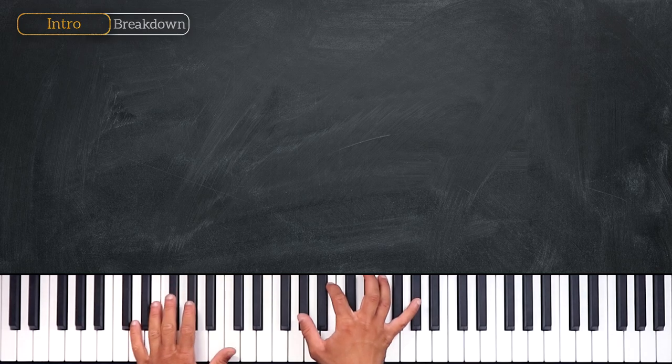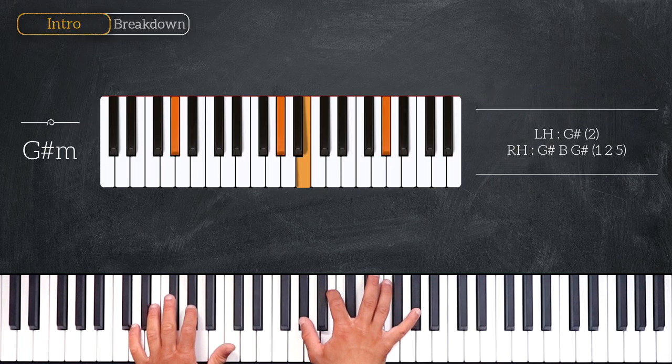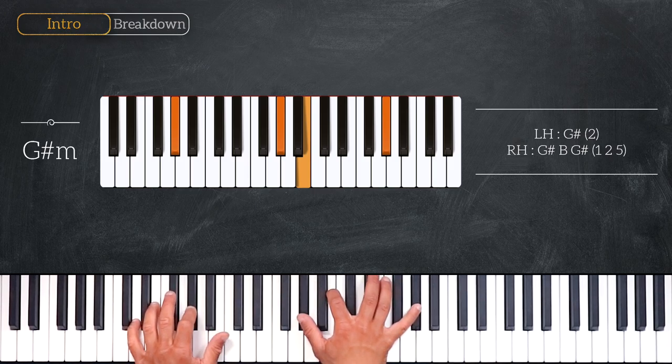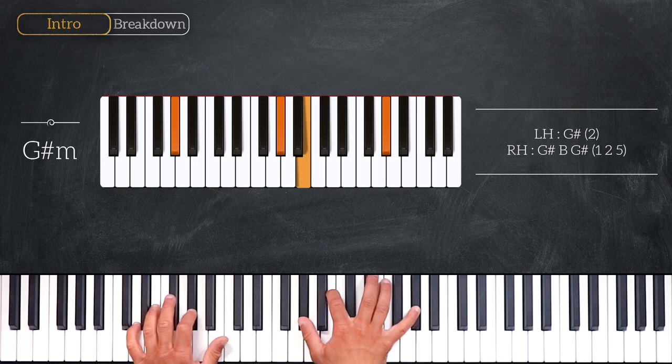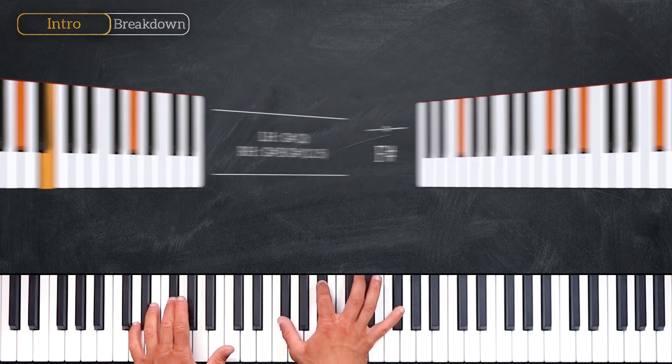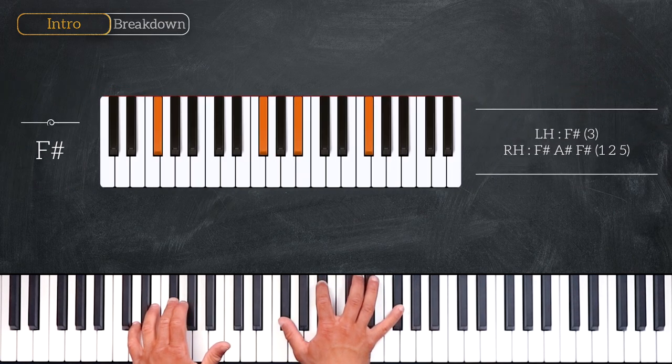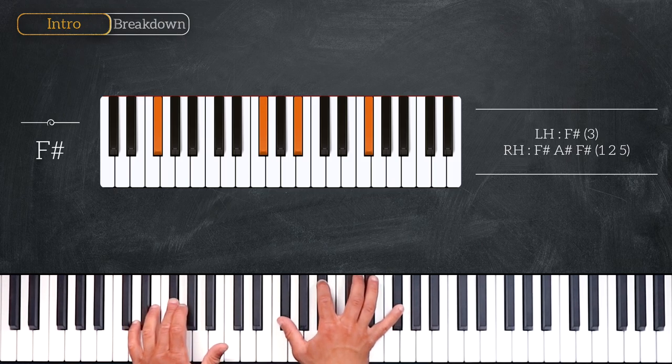We start on G-sharp minor, playing G-sharp on the left and G-sharp B-G-sharp on the right hand. Then we'll play this F-sharp chord playing F-sharp on the left, F-sharp, A-sharp and F-sharp on the right.